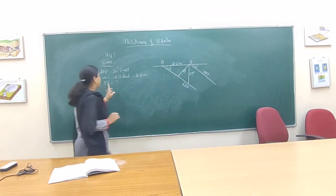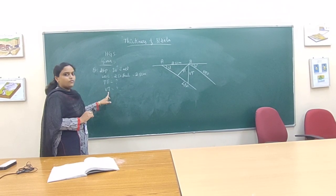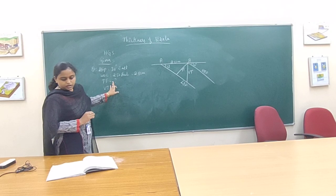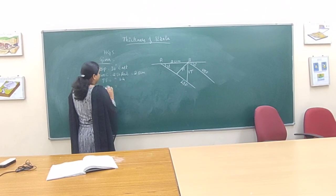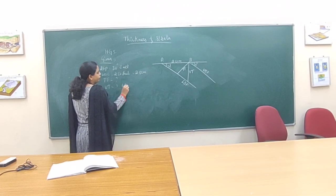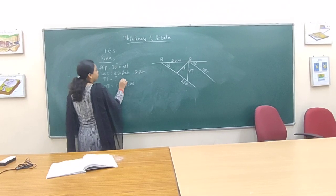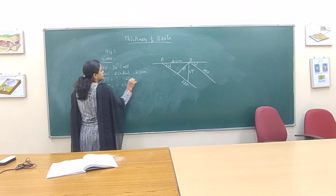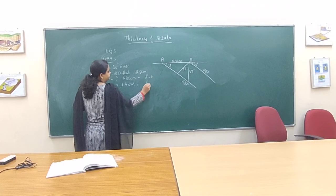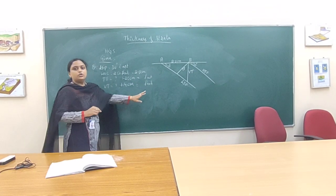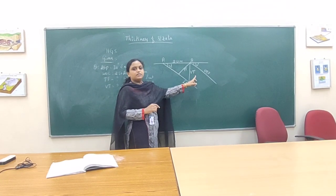So here you have to calculate the distance of true thickness and the distance of vertical thickness. You will get a vertical thickness of 1.4 centimeters — again, vertical thickness will be 1.4 centimeters. And the true thickness it will be 1.25 centimeters. Again, you have to convert these into feet. So like this, we can get both true thickness as well as vertical thickness. There are so many different types.